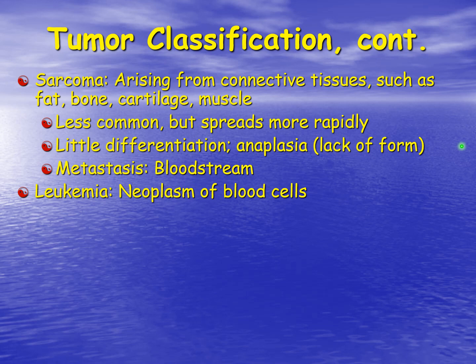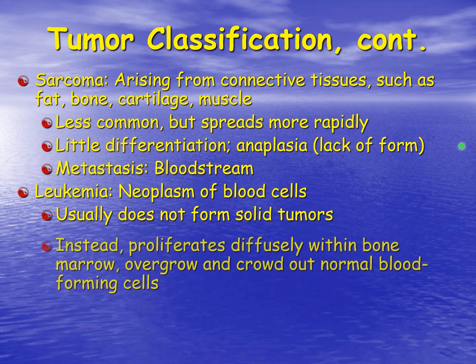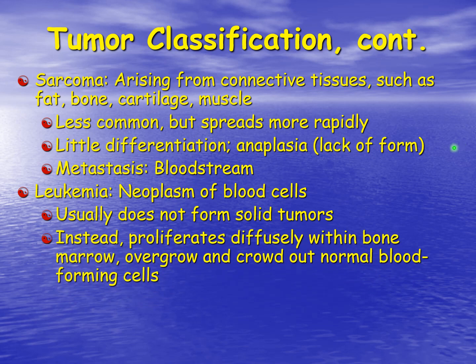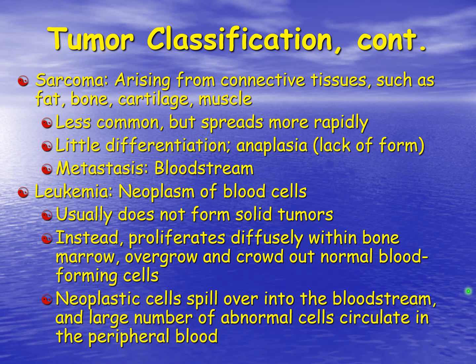Leukemias are neoplasias of blood cells and usually do not form solid tumors. Depending on which cell line is affected, we'll see an increase in that cell line within the peripheral blood. It proliferates diffusely within the bone marrow, overgrowing and crowding out normal blood-forming cells. These abnormal cells are then released into the bloodstream — they spill over and we see a large number of these abnormal cells circulating within the peripheral bloodstream.